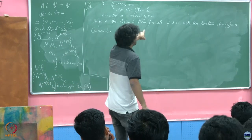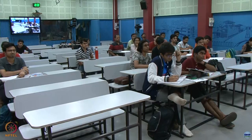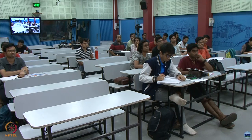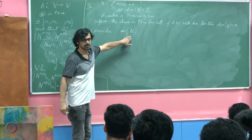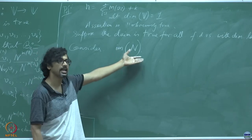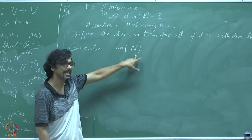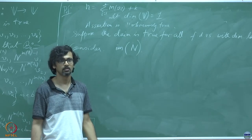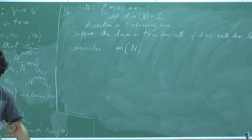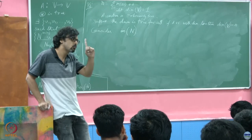Does it fit in this criteria? Does it have a dimension strictly less than n? If N was indeed non-singular — which is the only situation when N can span the entire vector space — if N was non-singular then can it be nilpotent? Any non-singular matrix cannot be nilpotent, because a nilpotent matrix must have all its eigenvalues equal to 0.